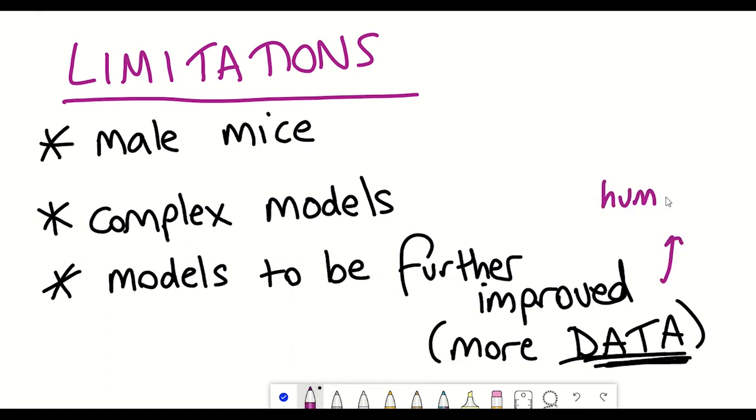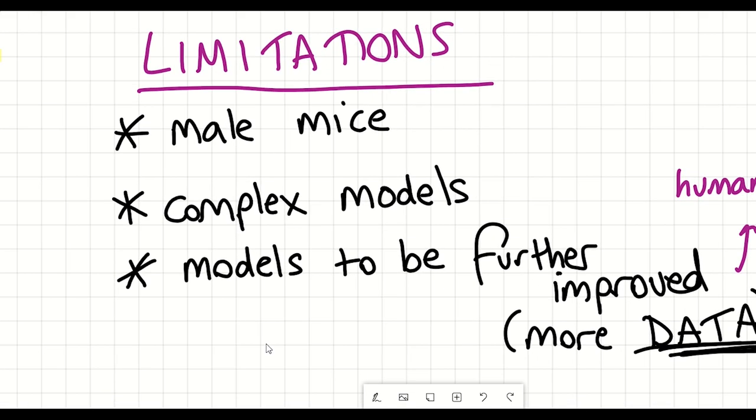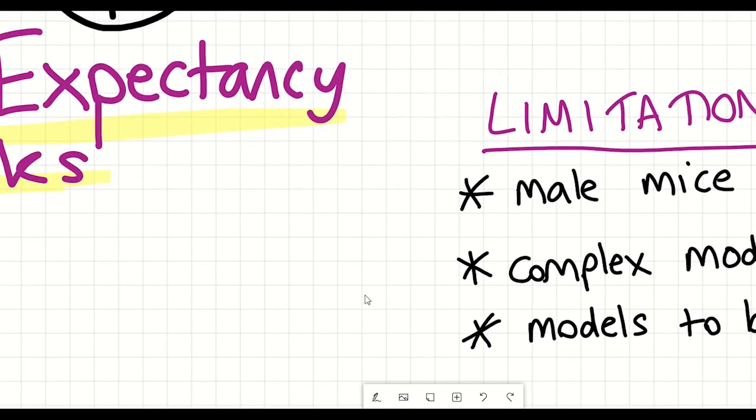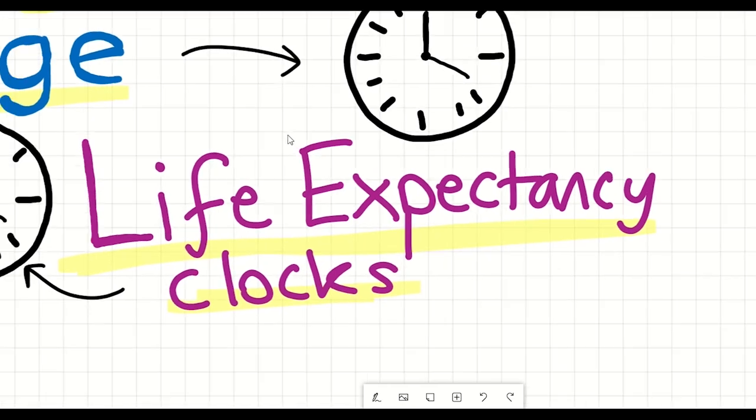And so due to the fact that a lot of data is needed to develop such models, it may take a while to be able to apply the same approaches to develop a clock for human frailty index data. But in theory, the AFRAID clock could be easily adapted to predict mortality from human frailty index data. But this research highlighted in this paper is definitely a good step forward to achieving this goal.